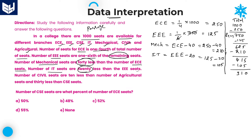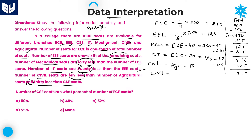Up to here the information is done. Number of civil seats are 10 less than agriculture, and 30 less than CSE seats. So the relationship is: Civil = Agriculture minus 10, and Civil = CSE minus 30. This is the relationship among civil, CSE, and agriculture.